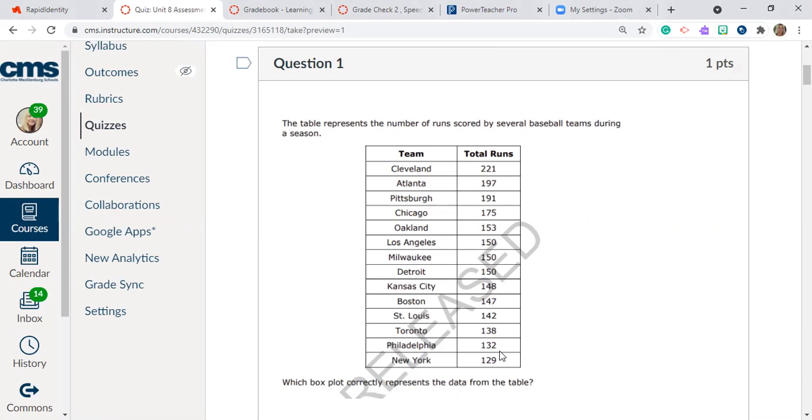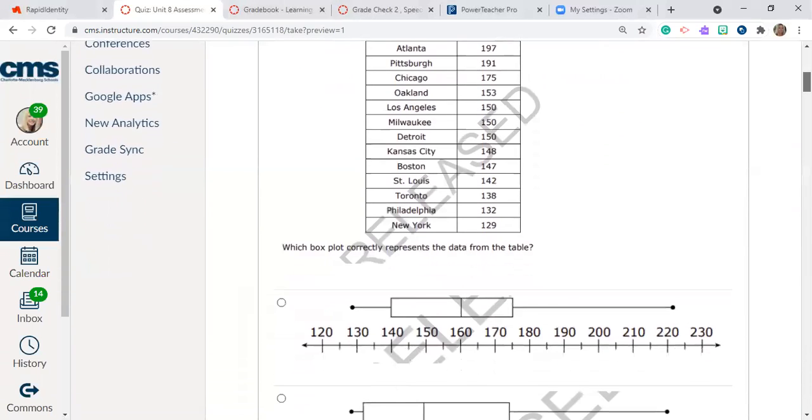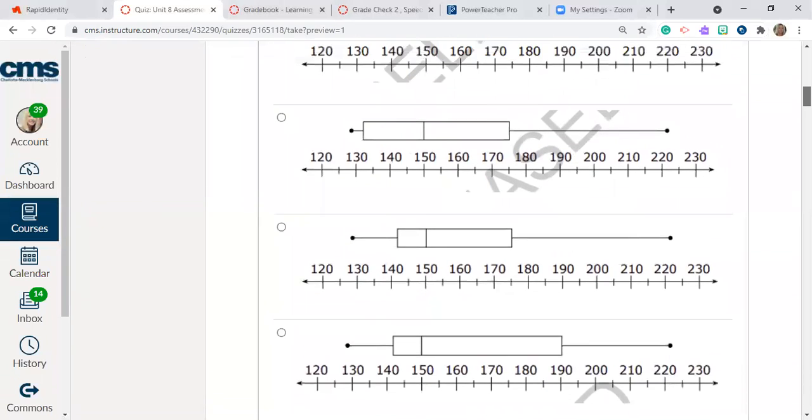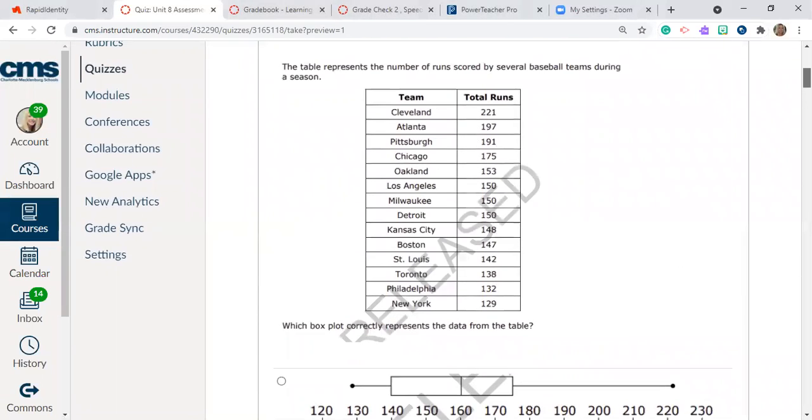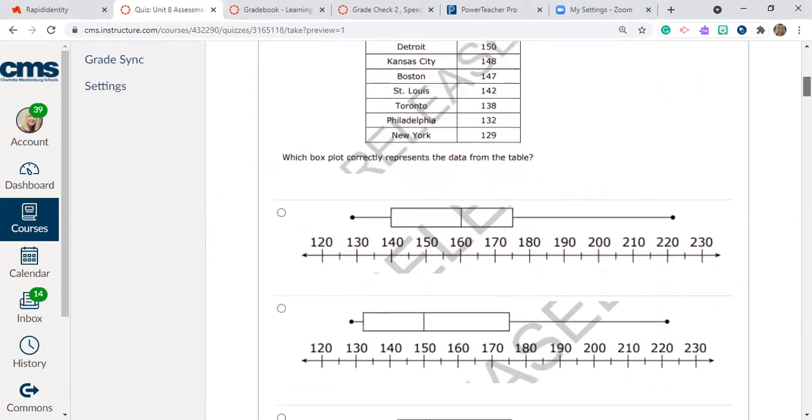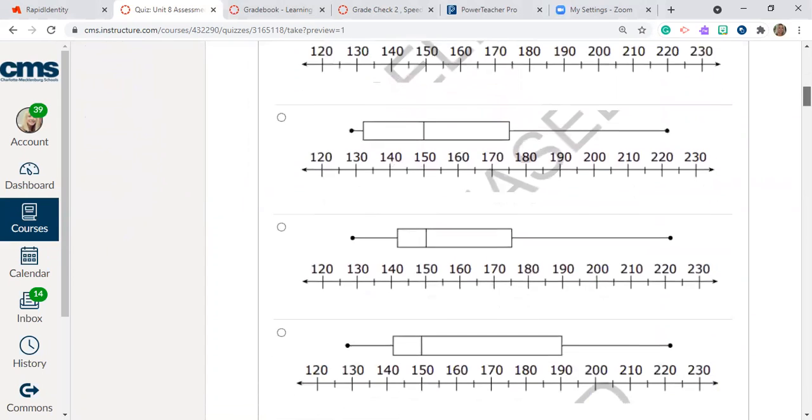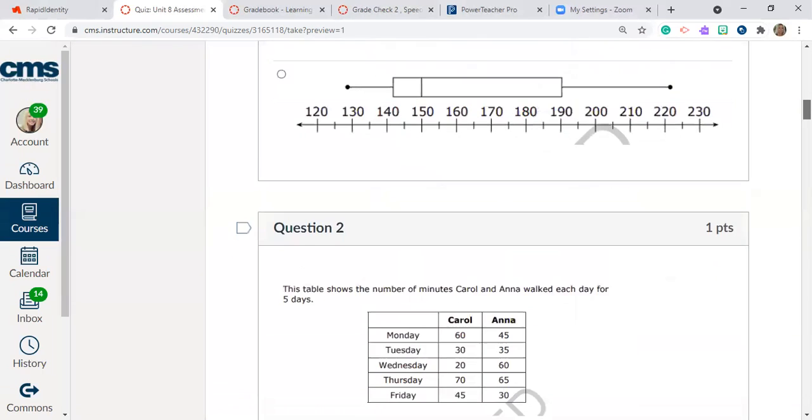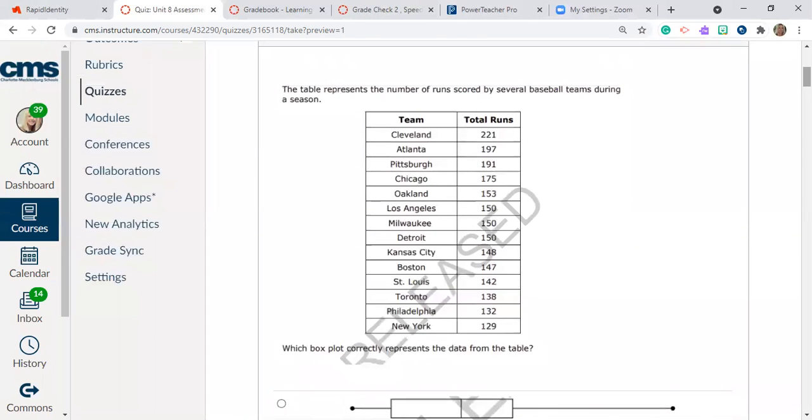Which box plot correctly represents the data from this table? So you're going to select the box plot that correctly represents the data and I'm going to give you a hint right now. The first thing that you're probably going to want to do is find the very upper end of the data and the very lower end of the data as well as the median. And that will help you determine which box plot is correct. Okay, you can pause and do that work.